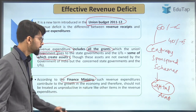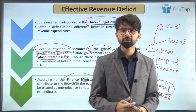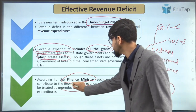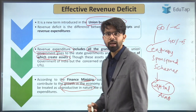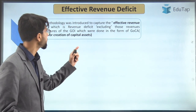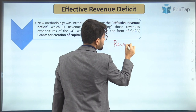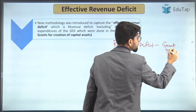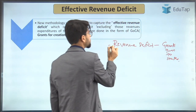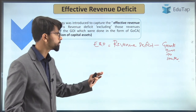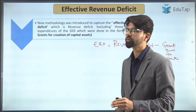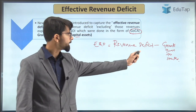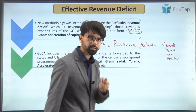Even though such expenditure is included within revenue expenditure, the nature of this expenditure is capital asset creation — not consumptive or non-productive. Hence they have to be deducted from revenue expenditure. The finance ministry states that such revenue expenditure contributes to growth in the economy, because constructing a road will last many years and reap multiple benefits. Therefore, these should not be treated as unproductive since they are capital intensive in nature. The formula is: Effective Revenue Deficit = Revenue Deficit minus grants given to states for creation of capital assets.